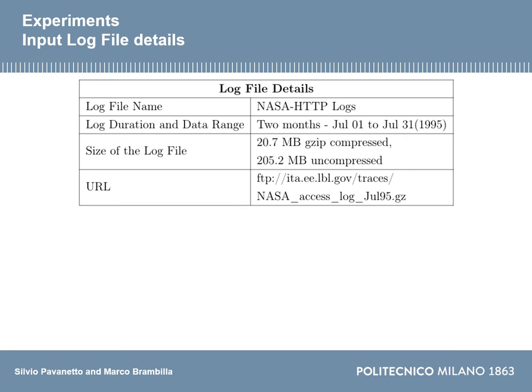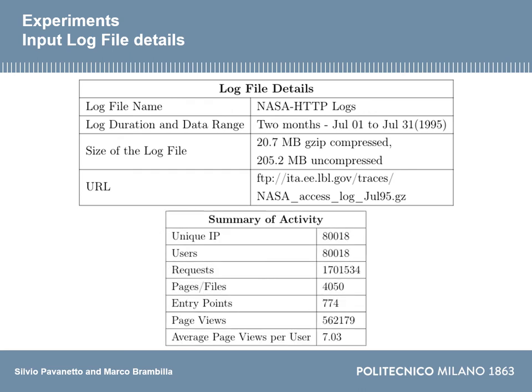Here we have an overview of the input data used for all experiments. We have statistics such as the file size, name, and the URL where it can be downloaded. We also have a summary of user activity extracted after the pre-processing algorithm, including the number of users, the number of entry points, the total page views, and the average page views per user.